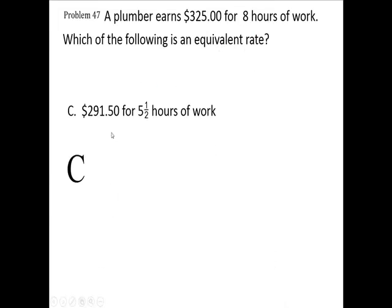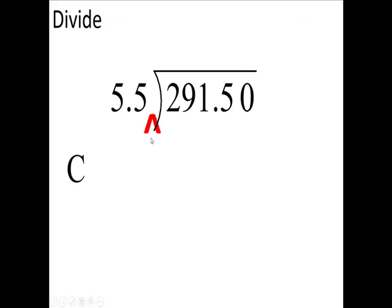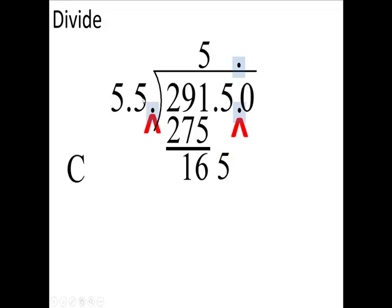So, let's test out answer C. 291.5 divided by 5.5. Move the decimal over 1. Scoot your decimal straight up there. 55 into 290, 5 times. 5 times 55 is 275. Subtract, we're going to get 16 and bring down the 5. And then divide this into this. It's going to go 3 times. 3 times 55 is 165. So, this is $53 an hour. That's not it. So far, B is my best answer.